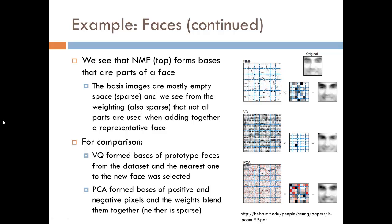While VQ chooses 49 prototype faces from the data set, and PCA has dense matrices of positive and negative pixel values, we see that the bases of NMF are parts of a face. Each basis is mostly empty space, meaning it is a sparse matrix, and the weight vector, constrained to being additive, only applies weights to certain versions of facial features, meaning there are many empty cells here too.